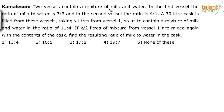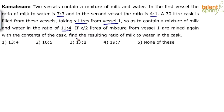Two vessels contain a mixture of milk and water. In the first vessel the ratio of milk to water is 7:3 and in the second vessel the ratio is 4:1. A 30 liter cask is filled from these vessels taking x liters from vessel 1 so as to contain a mixture of milk and water in the ratio 11:4. If x/2 liters of the mixture from vessel 1 are mixed again with the contents of the cask, find the resulting ratio of milk to water in the cask.